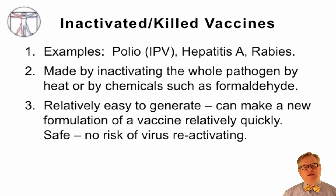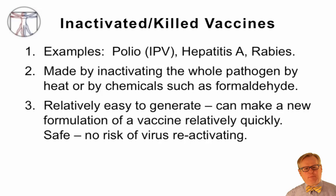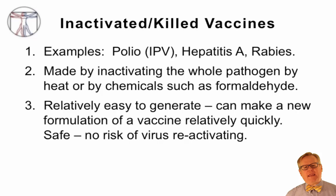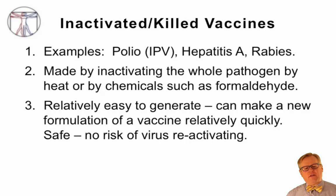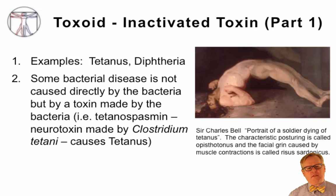Inactivated or killed vaccines include the injected polio vaccine (IPV), the hepatitis A vaccine, and the rabies vaccine. These vaccines are made by inactivating the whole pathogen by heat or by chemical inactivation with chemicals such as formaldehyde. The advantages are that they're relatively easy to generate, so new formulations can be made quickly, and they're relatively safe because there's no risk of the virus or pathogen being reactivated.